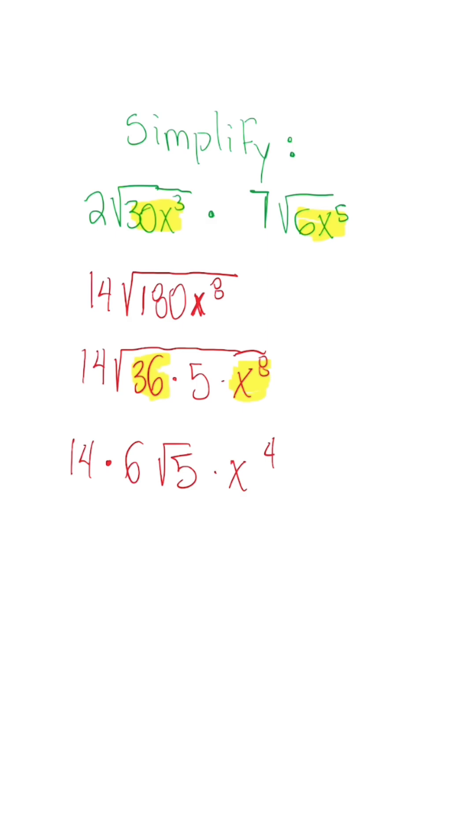So we multiply again: 14 times 6 is going to give us 84, we have x to the fourth, and then radical 5 is going to stay the same. So when you're multiplying radical expressions with variables, this is how you will do it. Always double check at the end if there is anything else that you can simplify under the radical.